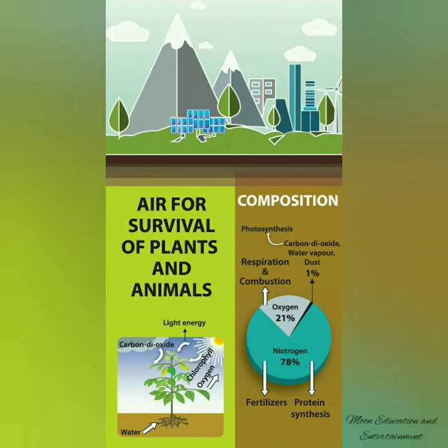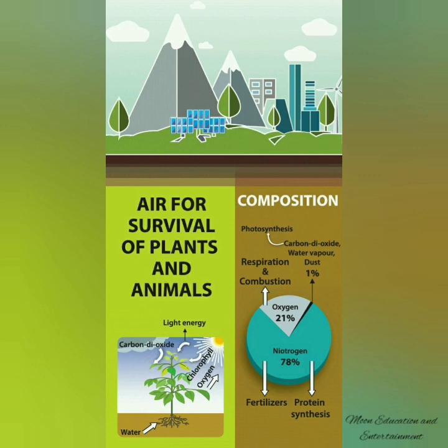Air is very important for the survival of plants and animals. Air is composed of different gases. The major component of air is nitrogen, which makes up almost four-fifths of the air. The second major component is oxygen, which makes up one-fifth of the air. In addition to nitrogen and oxygen, air also contains small amounts of carbon dioxide, water vapor, and other gases like argon and helium. Air may also contain some dust particles. Nitrogen makes up 78%, oxygen 21%, and dust particles, water vapor, and carbon dioxide together make up only 1%.